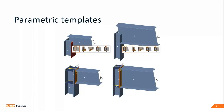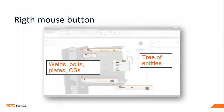We also implemented another improvement called parametric templates, available from version 9.9.1, released in autumn 2018. These parametric templates help you connect members to each other — they adapt to various cross-sections, are able to stretch or replace bolts, and can adjust the thickness of connected plates. It's a really very useful feature.